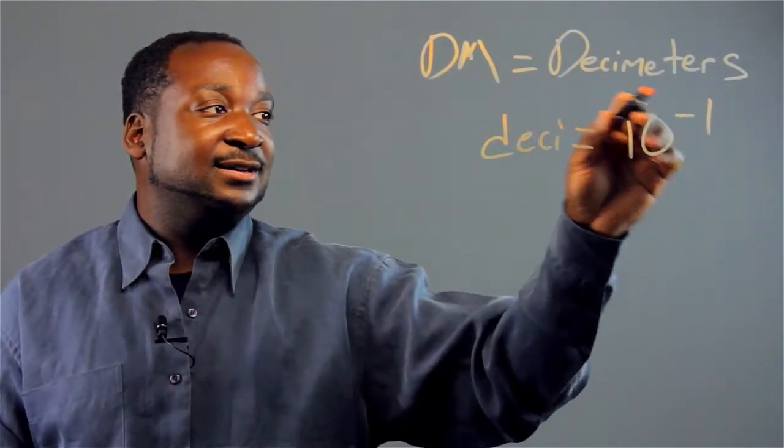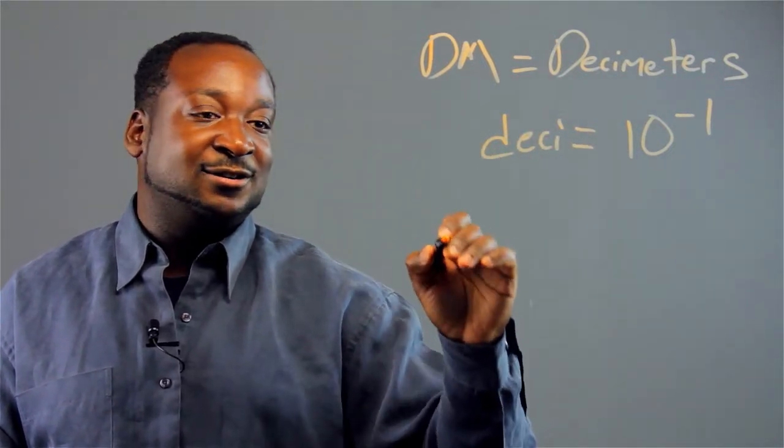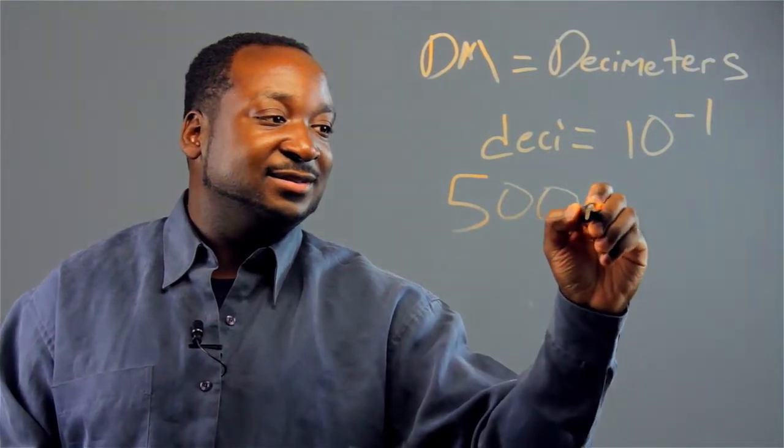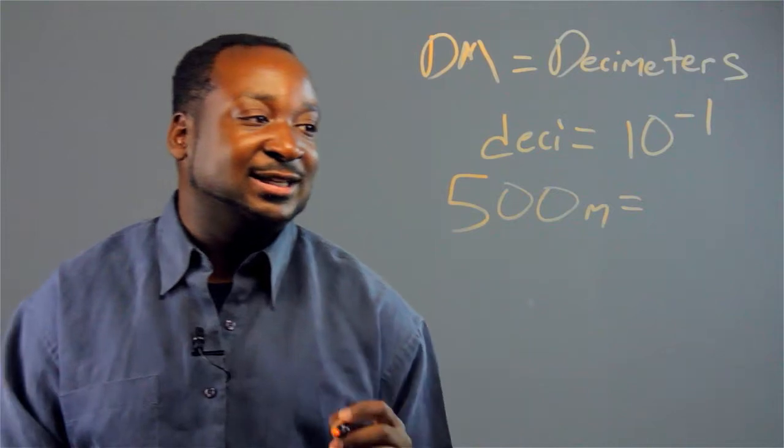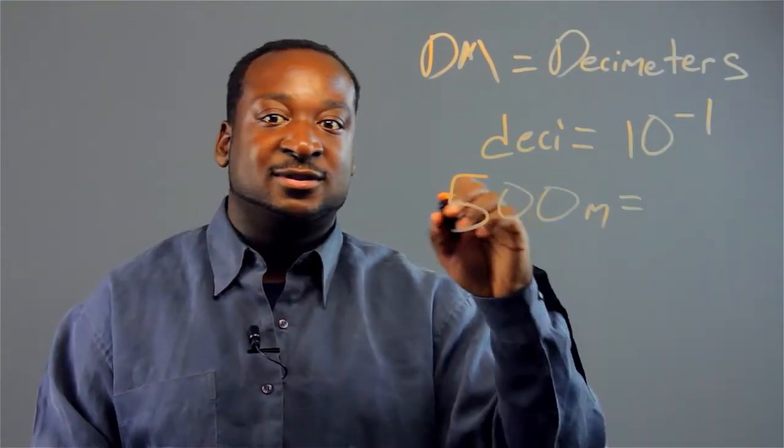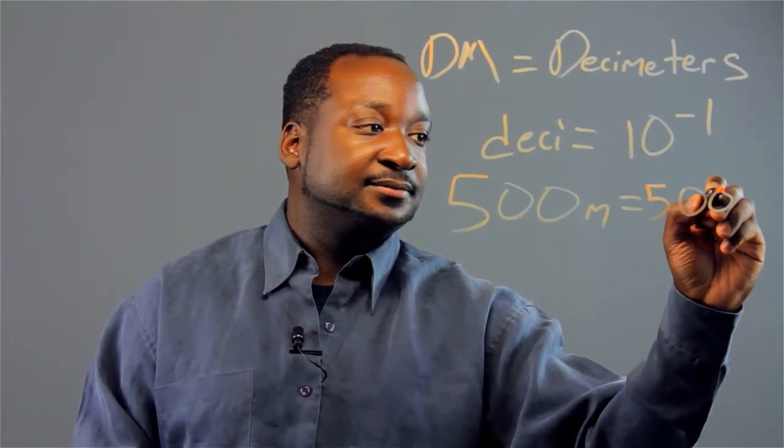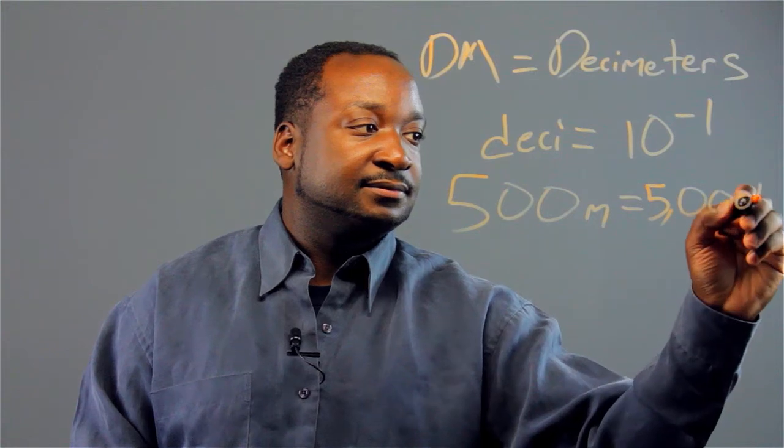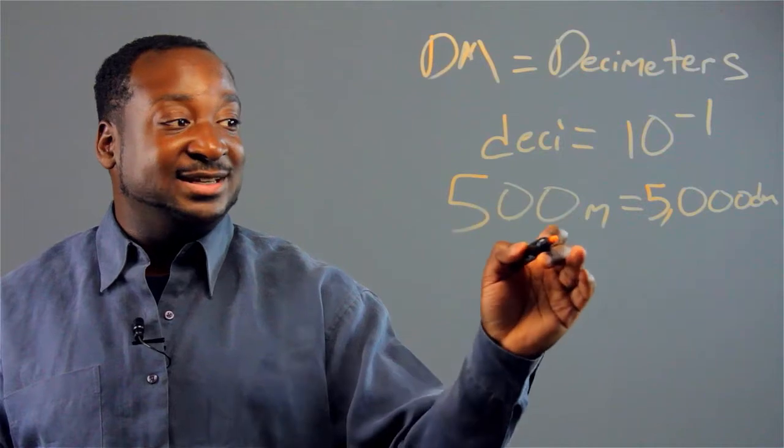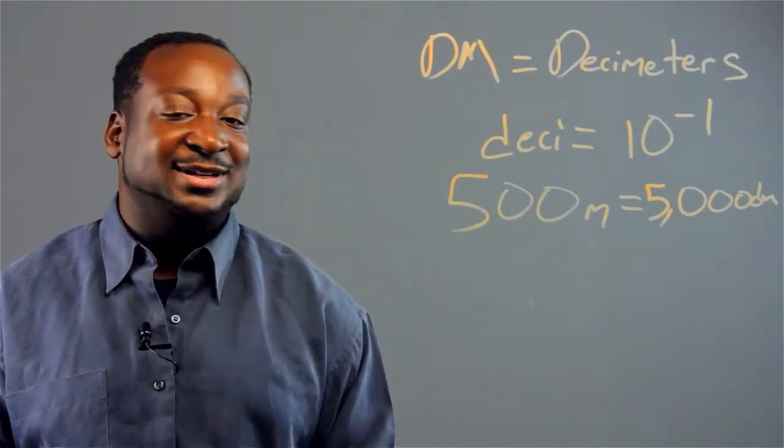So to solve this in real life terms, let's say we have 500 meters and we want to convert this to decimeters. We'll just move the decimal place over one place. So there you have it. 500 meters is equivalent to 5,000 decimeters.